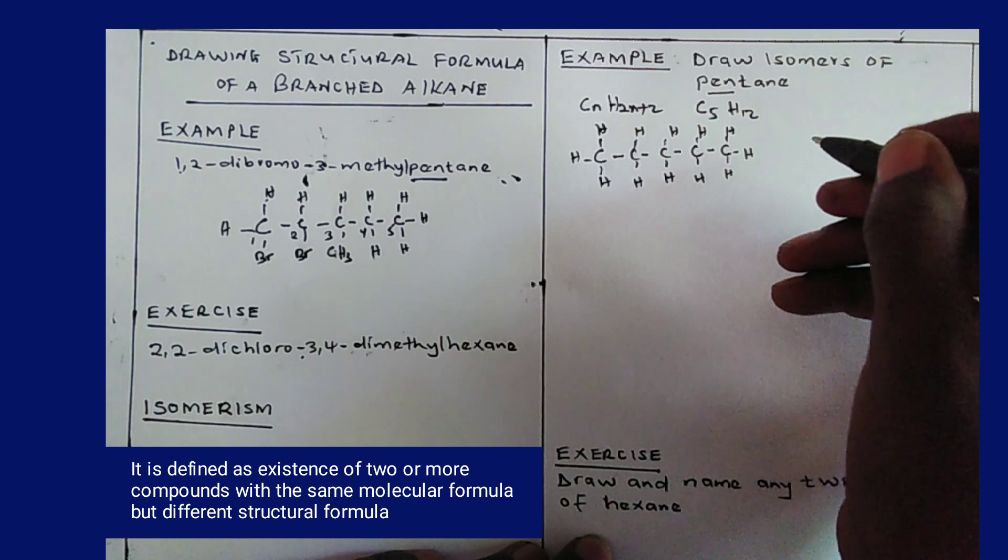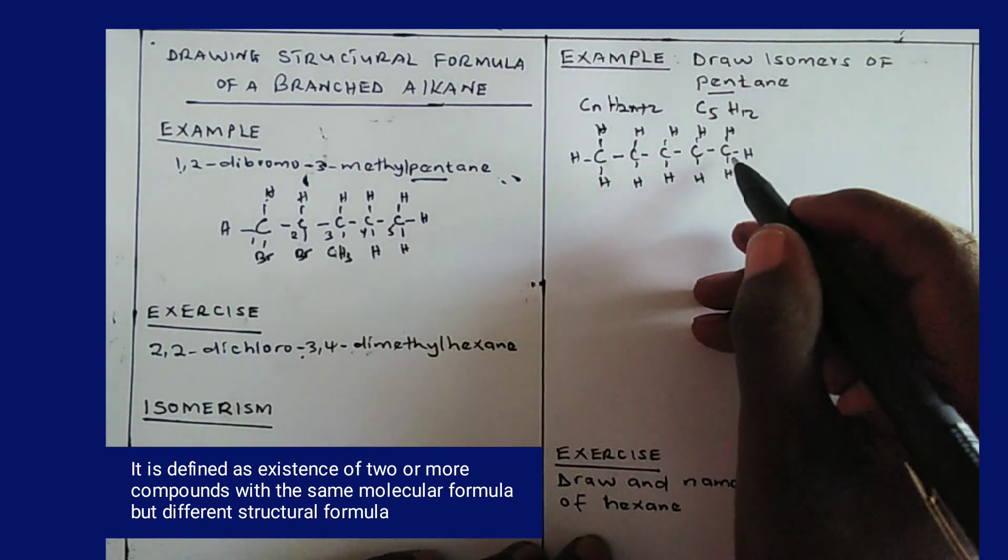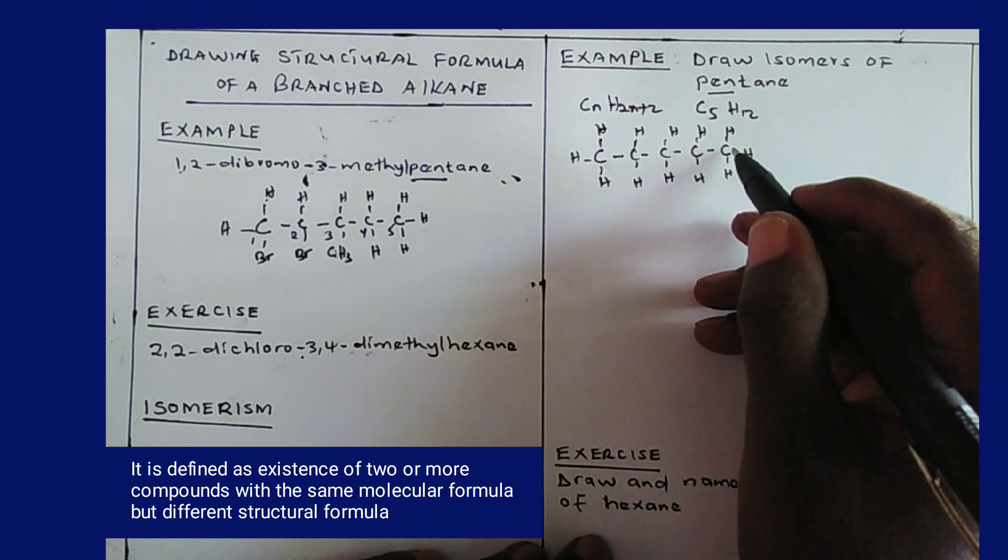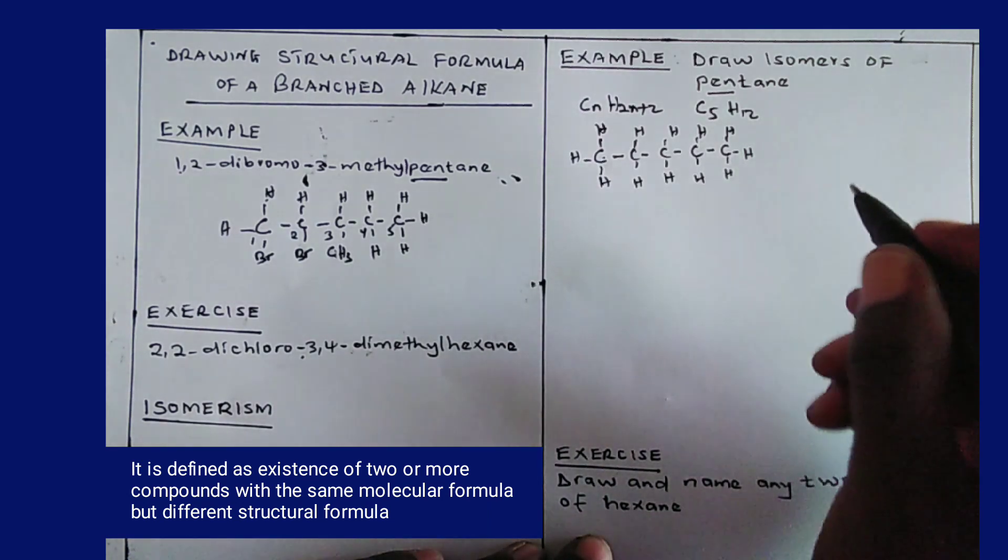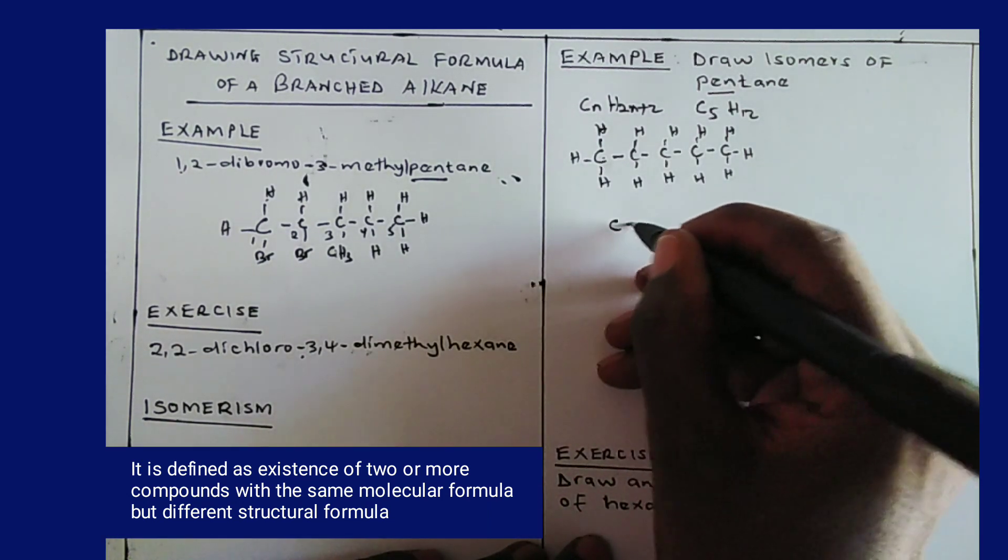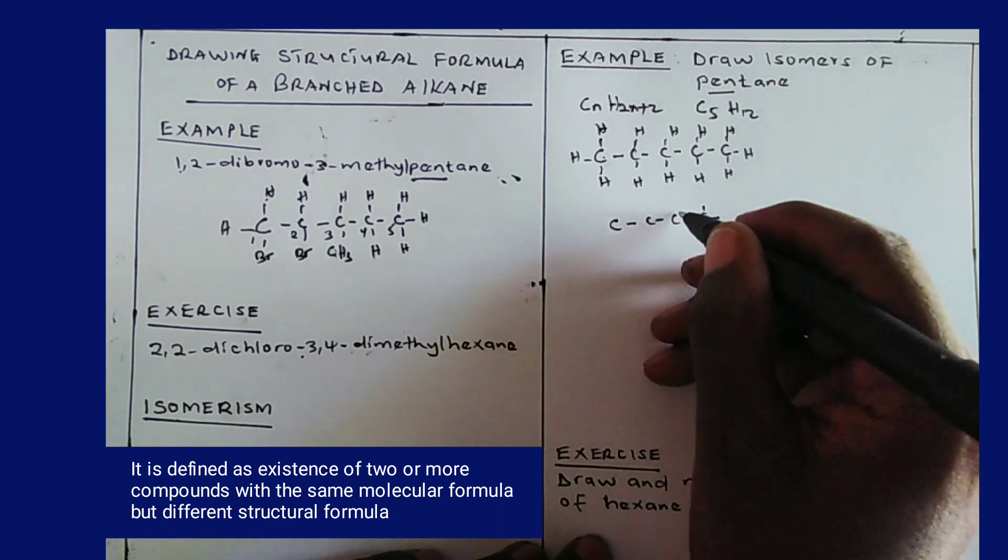Now in the next isomer you modify the structural formula of this one here by removing the carbon atom which has 3 hydrogen atoms. In this case I either remove this one or this one here. If I remove one I remain with 4, so I draw the 4 carbon atoms then I make the bonds to be four.